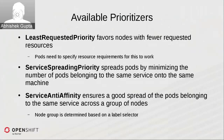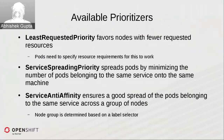One available priority function is Least Requested Priority, which favors nodes where fewer resources are requested. It calculates resources already consumed by pods on a given node and prioritizes nodes with greater available capacity while deprioritizing those with low capacity. Note that pods do need to specify CPU and memory requirements for this function to have meaningful impact.